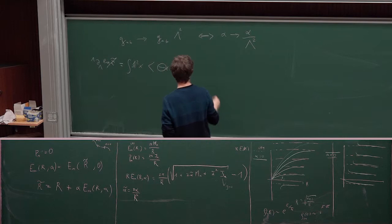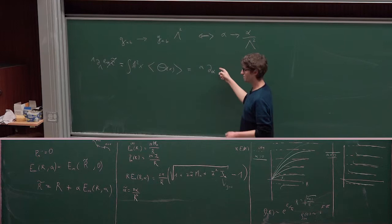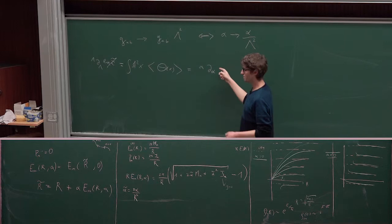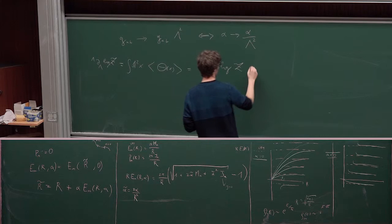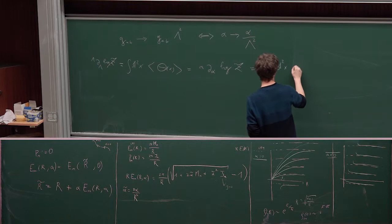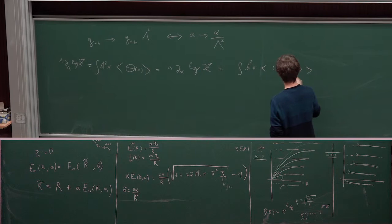And, so, this tells you how your partition function behaves under scalings. But, okay, this essentially has to be also how the partition function behaves under shifts in alpha. So, this is the integral of the expectation value of TT bar times alpha.